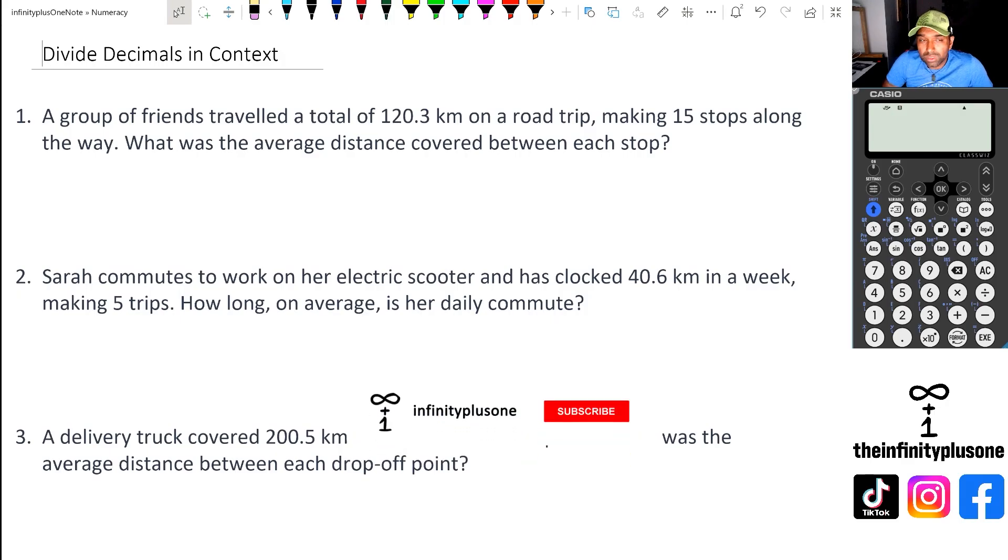Alright, so let's go to question number one here. We've got a group of friends that traveled 120.3 kilometers on a road trip, making 15 stops along the way. What was the average distance covered between each stop?